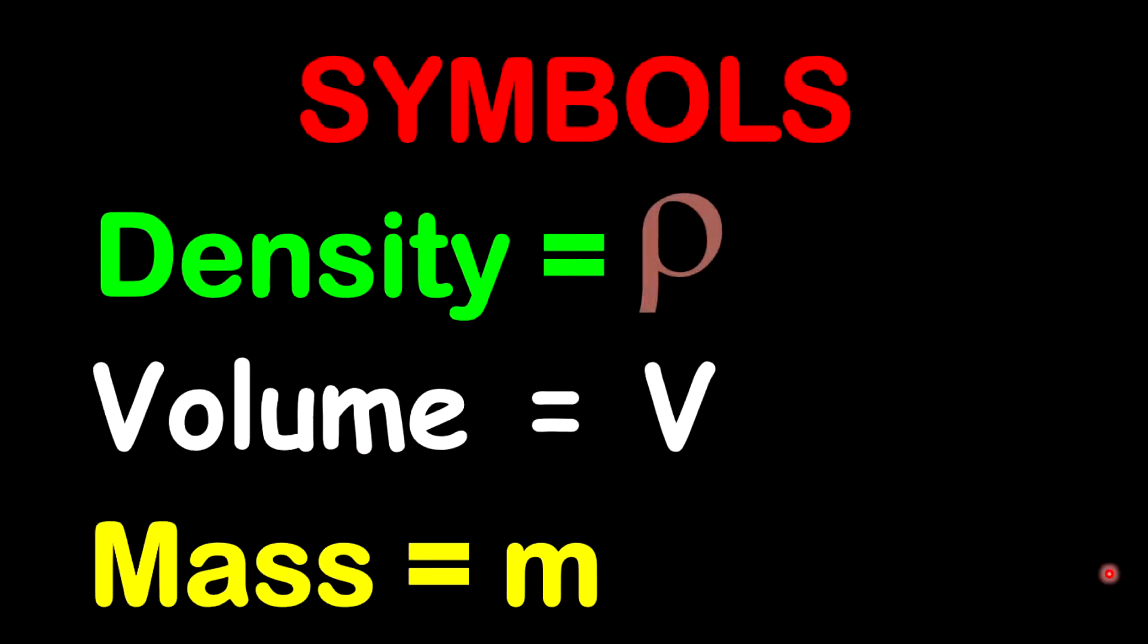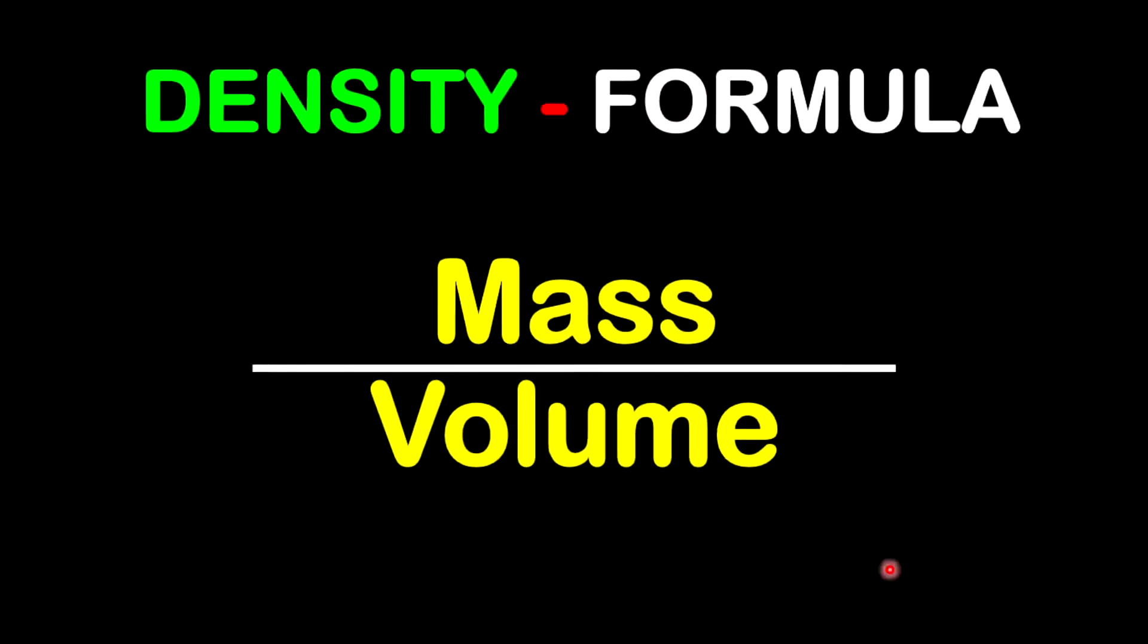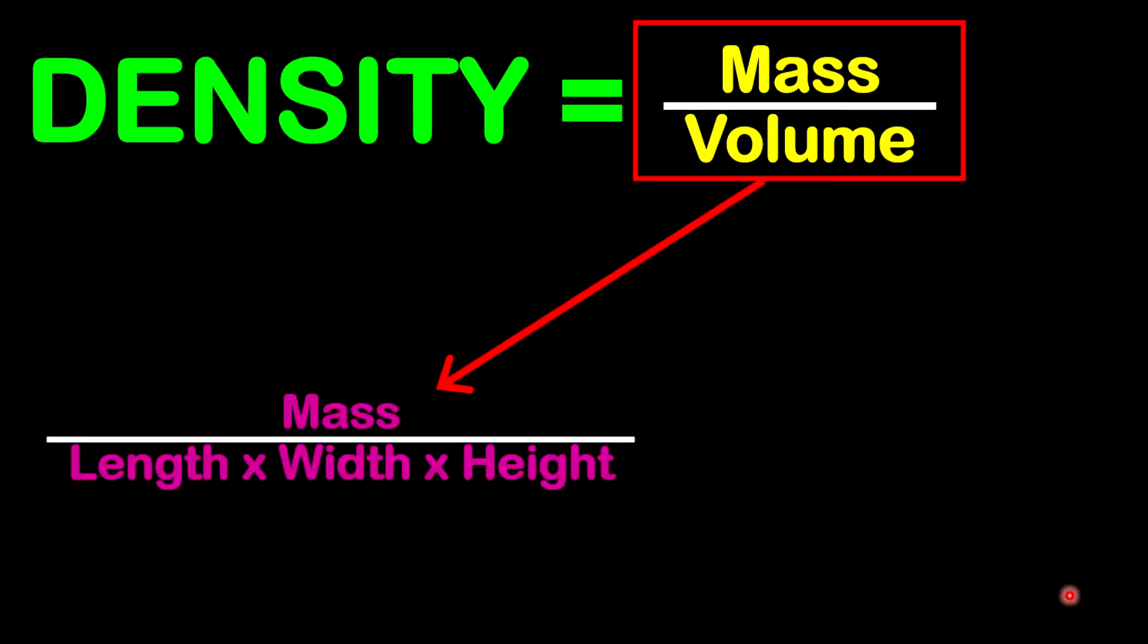Now the symbols that you should know is that density is represented by the symbol rho, volume by V and mass by M. Now time for the formula for density. Density is equal to mass over volume. Now I want to point out something right here. Based on the formula, we can also represent this as mass over length times width times height.